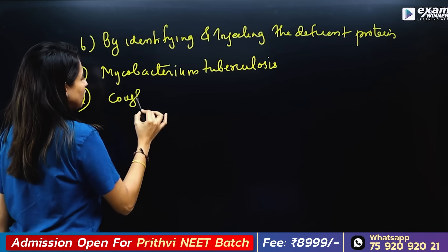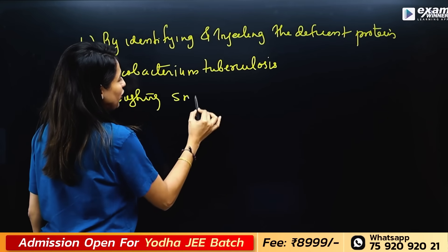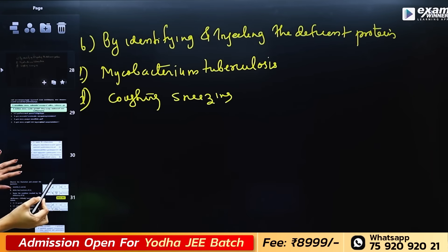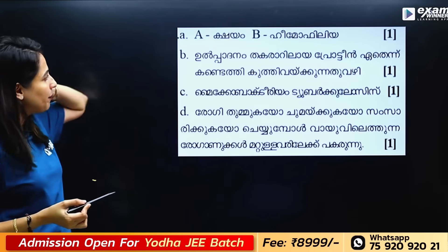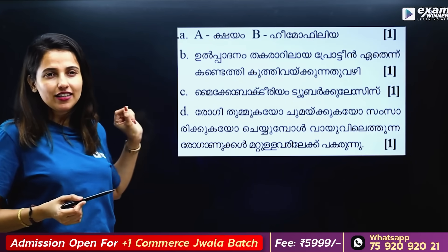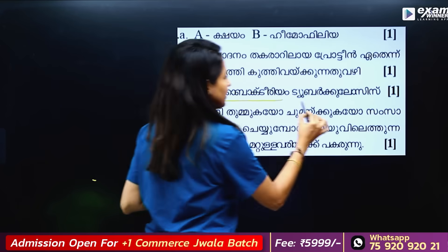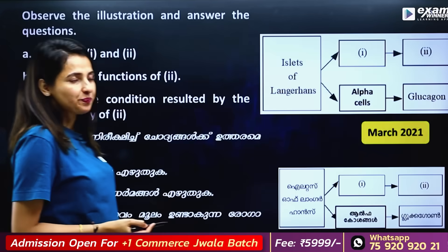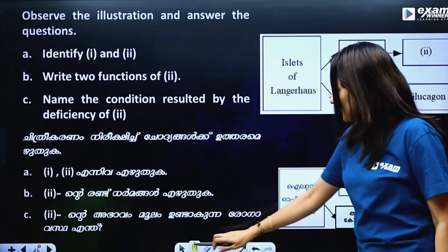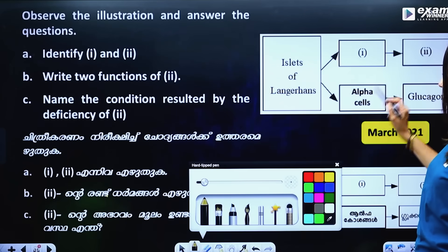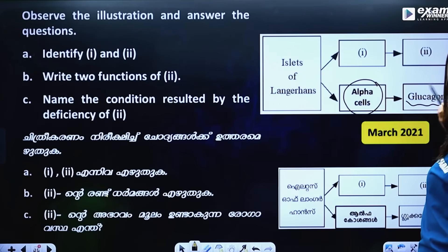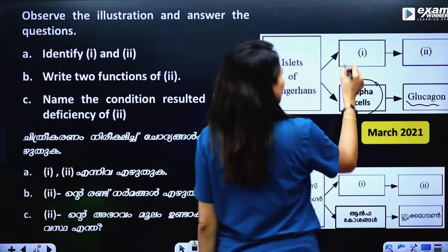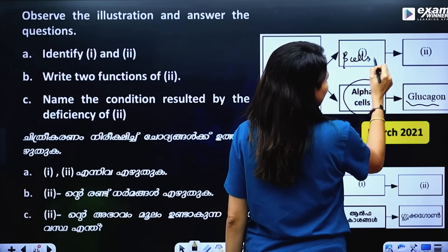This disease is transmitted through coughing and sneezing. Now, looking at the pancreas, you have two things: one is alpha cells producing glucagon, and one is beta cells producing insulin.